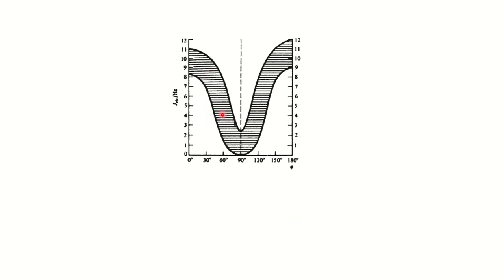Now looking at the Karplus curve: on the x-axis, dihedral angles are given from 0° to 180°, and on the y-axis you have the J(vicinal) value in Hertz — the unit of coupling constant. At 90°, which is in the center, the J value is minimum, essentially 0 Hz, while at 0° and 180° the J value is maximum.